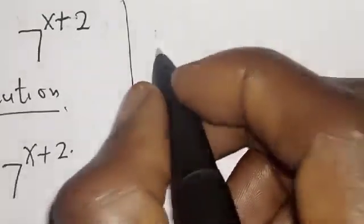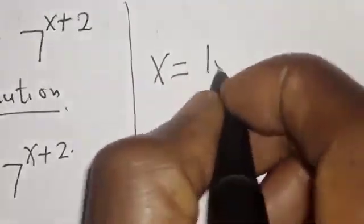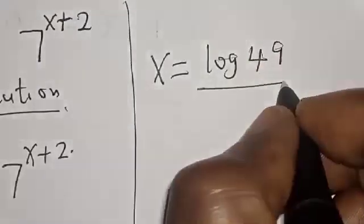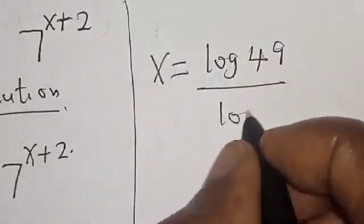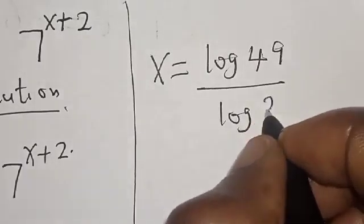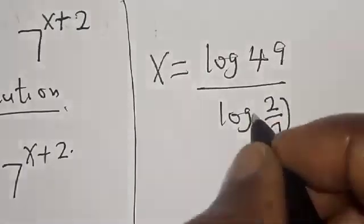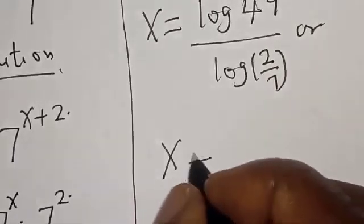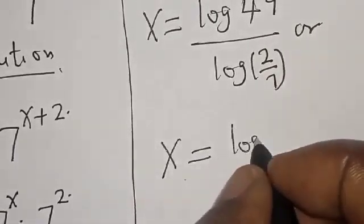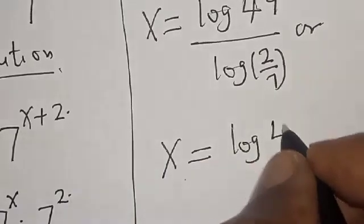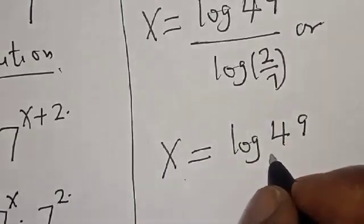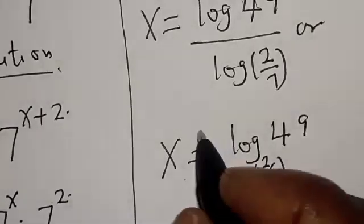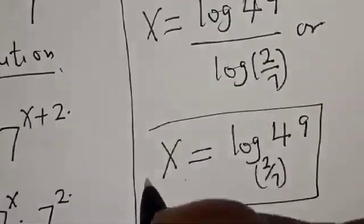Then s is equal to log 49 over log 2 over 7, or s is equal to log 49 base 2 over 7. That is our final answer. If you have enjoyed the class, please don't forget to like, share, comment and subscribe.